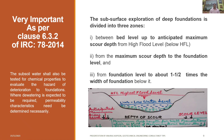As per Clause 6.3.2 of IRC 78-2014, the subsurface exploration for deep foundations is divided into three zones. Zone one: between bed level up to the anticipated maximum scour level from high flood level. Zone two: from the maximum scour level to the foundation level, with a minimum grip length for well foundations equal to one-third of the maximum scour depth below the scour level. Zone three: from foundation level to about one to one and a half times the width of the foundation below it — preferably one and a half times the well diameter below the proposed foundation level.